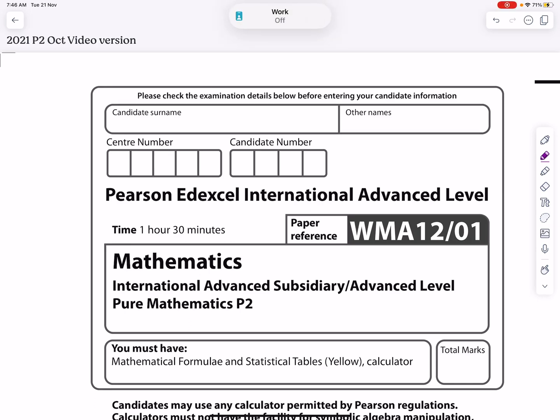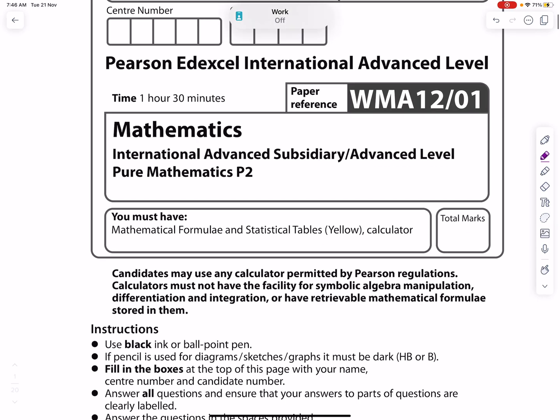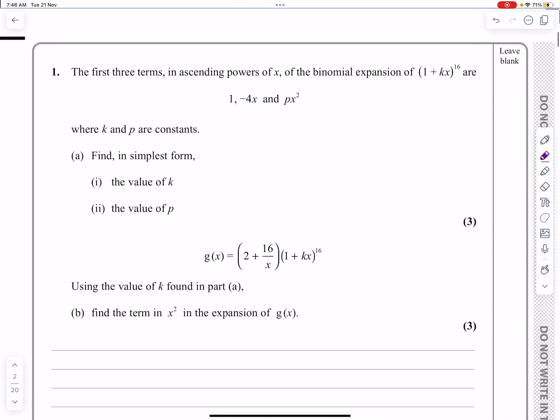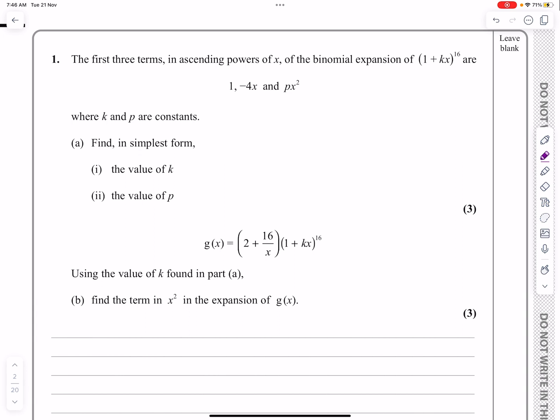Okay, this is the P2 paper from October 2021. It's question number one, and as we can see when I get there, this is going to be a binomial expansion question.